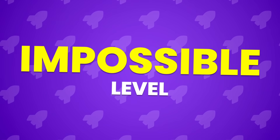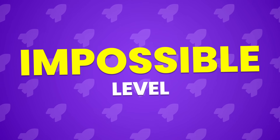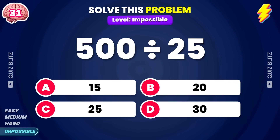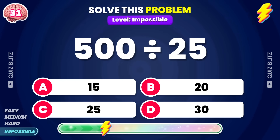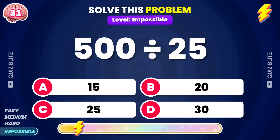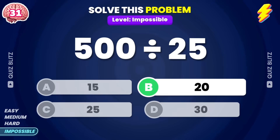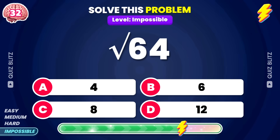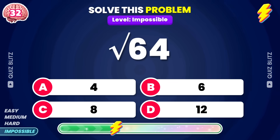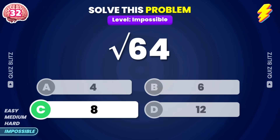Here we go for the impossible level! Good luck! 500 divided by 25. The answer is 20. What is the square root of 64? The result is 8.